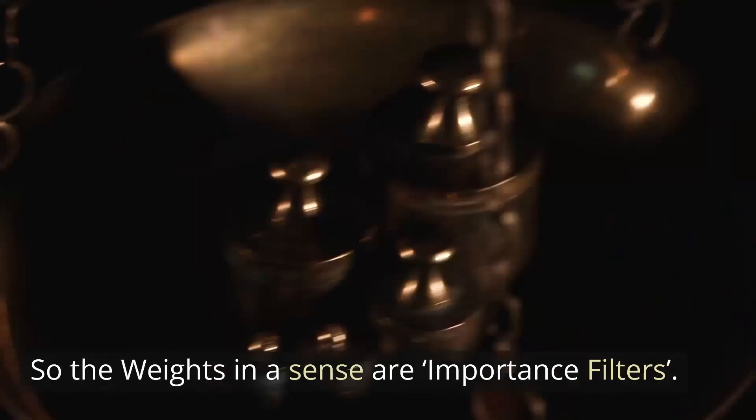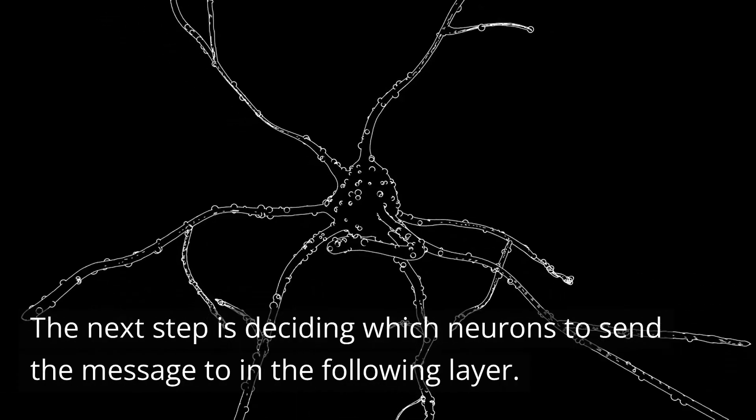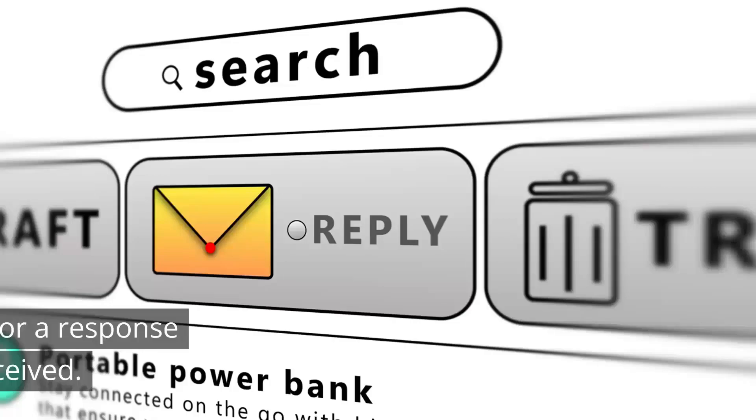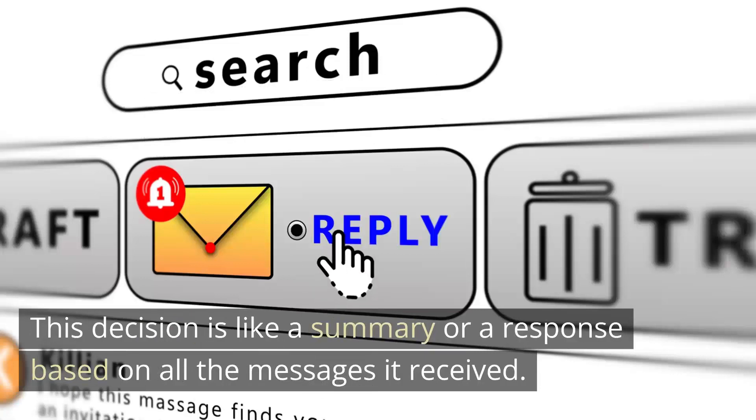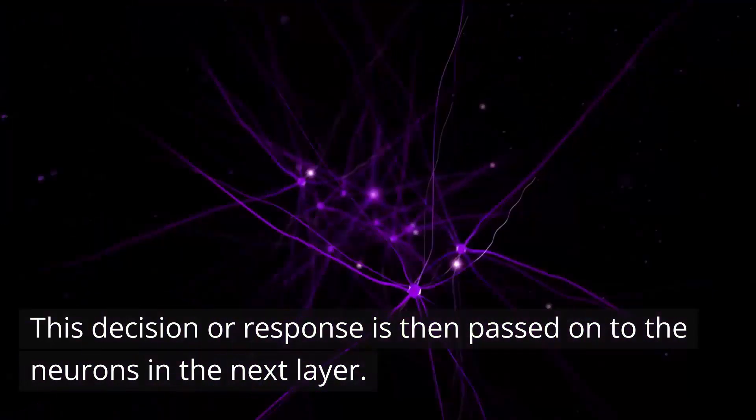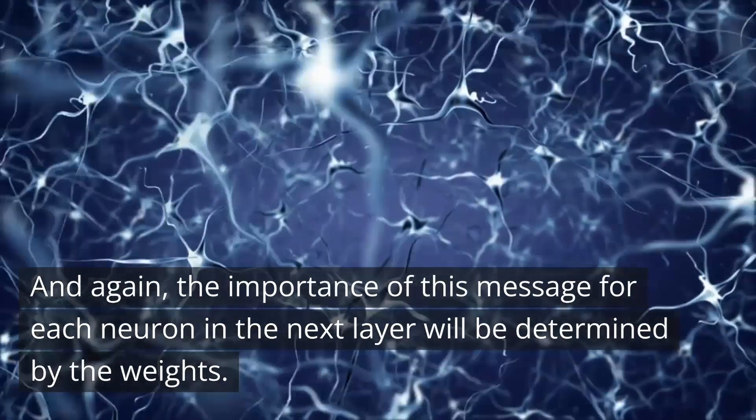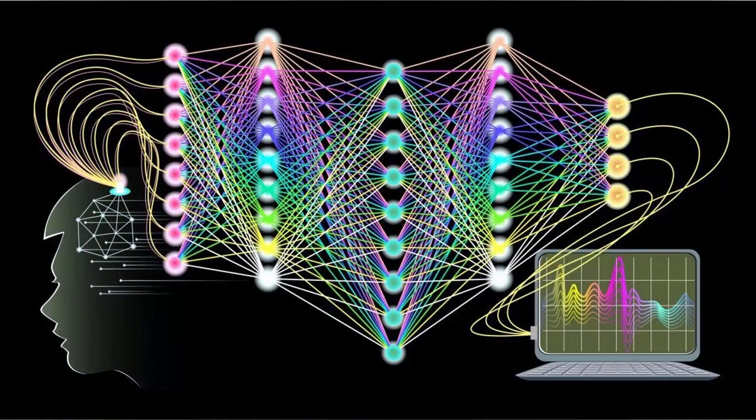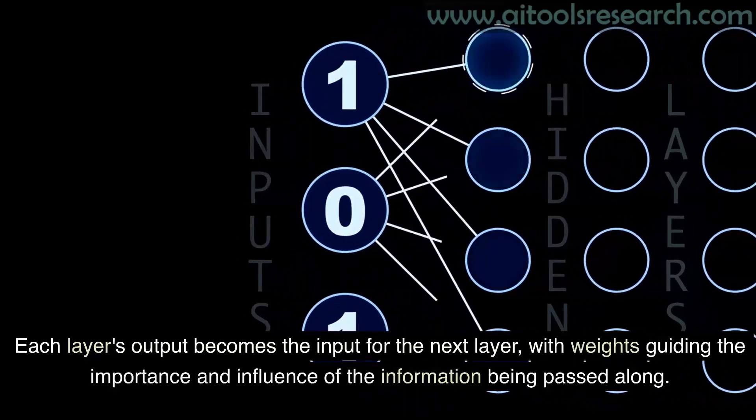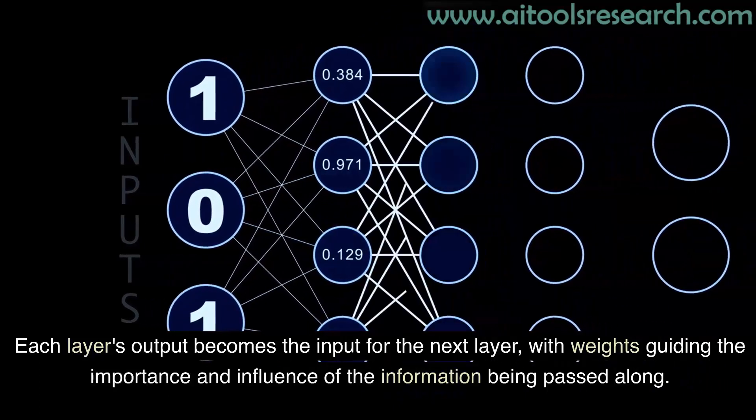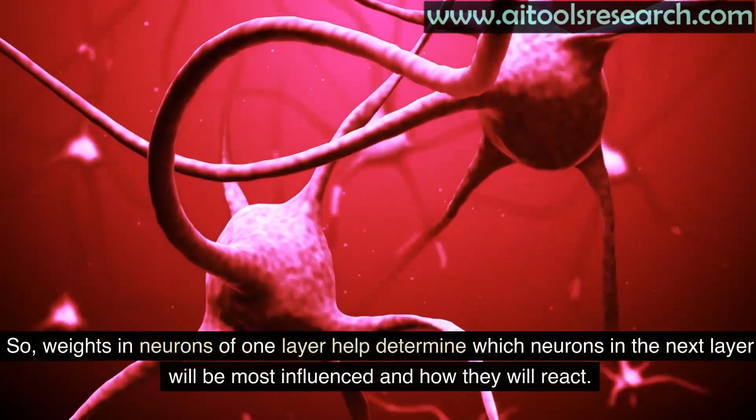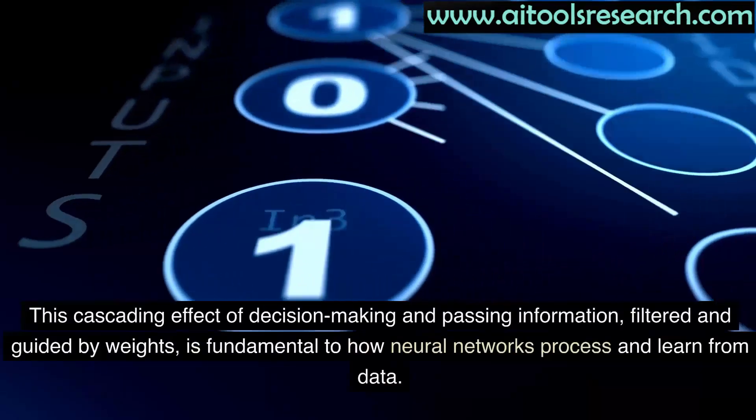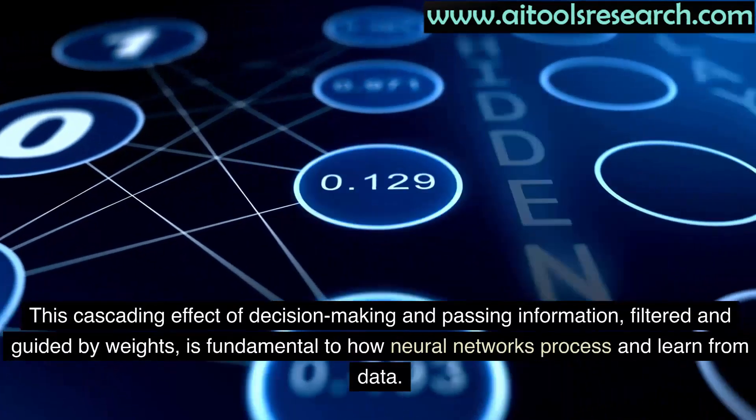So the weights, in a sense, are importance filters. The next step is deciding which neurons to send the message to in the following layer. The neuron processes these messages, taking into account their importance, that is weights, and then makes a decision. This decision is like a summary or a response based on all the messages it received. This decision or response is then passed on to the neurons in the next layer. And again, the importance of this message for each neuron in the next layer will be determined by the weights. This is how the decision passing process works. This process happens layer by layer. Each layer's output becomes the input for the next layer, with weights guiding the importance and influence of the information being passed along. So weights in neurons of one layer help determine which neurons in the next layer will be most influenced and how they will react. This cascading effect of decision-making and passing information, filtered and guided by weights, is fundamental to how neural networks process and learn from data.